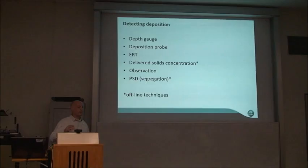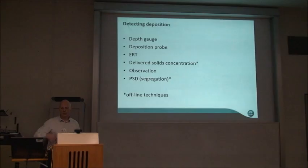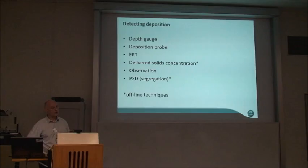Ways to detect deposition include: depth gauges — when they're not equal or indicate we don't have constant slope, we know deposition is occurring; deposition probes — electrodes on the bottom of the channel that detect particles moving past them; ERT — though that wasn't terribly useful in this set of trials; and delivered solids concentration — if it's a nice constant value everything is fine, but when we start seeing variations that indicates deposition. Observation through holes cut in the pipe shows when deposition occurs, and we can also measure the PSD of material to detect segregation before deposition.